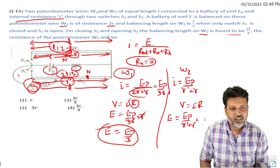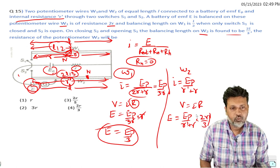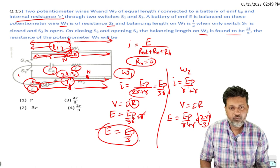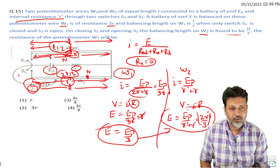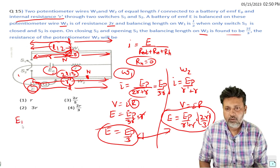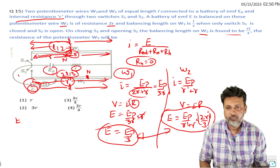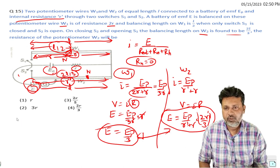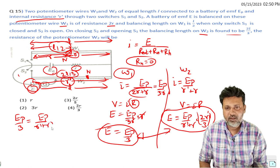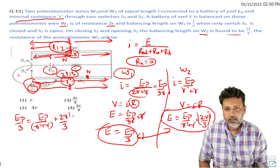Now equating the values from both cases: when balance point is at 2l/3, voltage equals E_p divided by 3. This equals E_p divided by (r dash plus r) times 2r dash by 3.